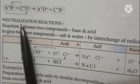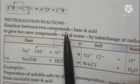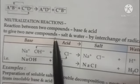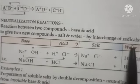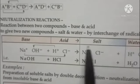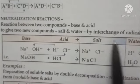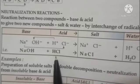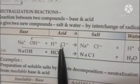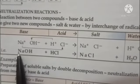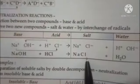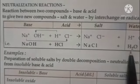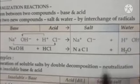Next is the neutralization reaction. Neutralization reactions are reactions between two compounds — one is an acid and the other is a base — to give two new compounds: salt and water, by interchange of radicals. For example, when sodium hydroxide reacts with hydrochloric acid, sodium combines with Cl and H comes in place of sodium, forming sodium chloride (salt) and water. A reaction between an acid and a base to give salt and water is called a neutralization reaction.